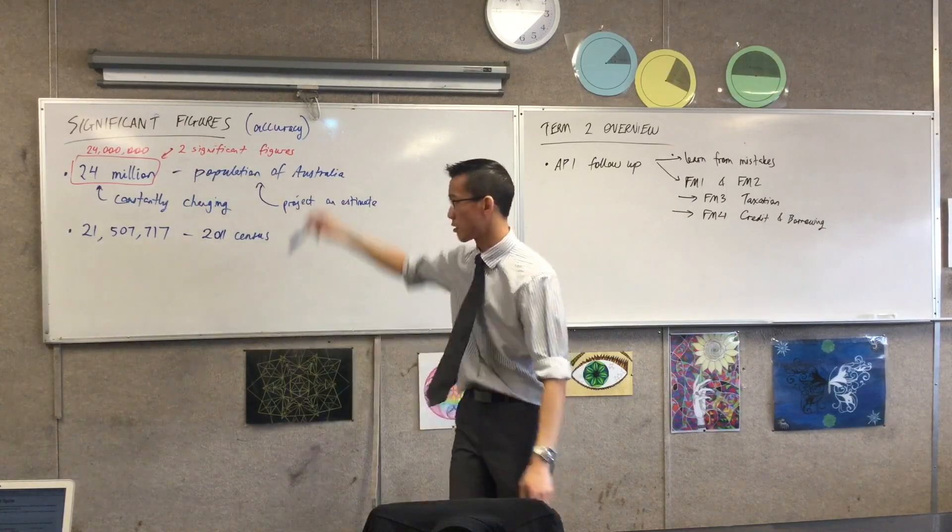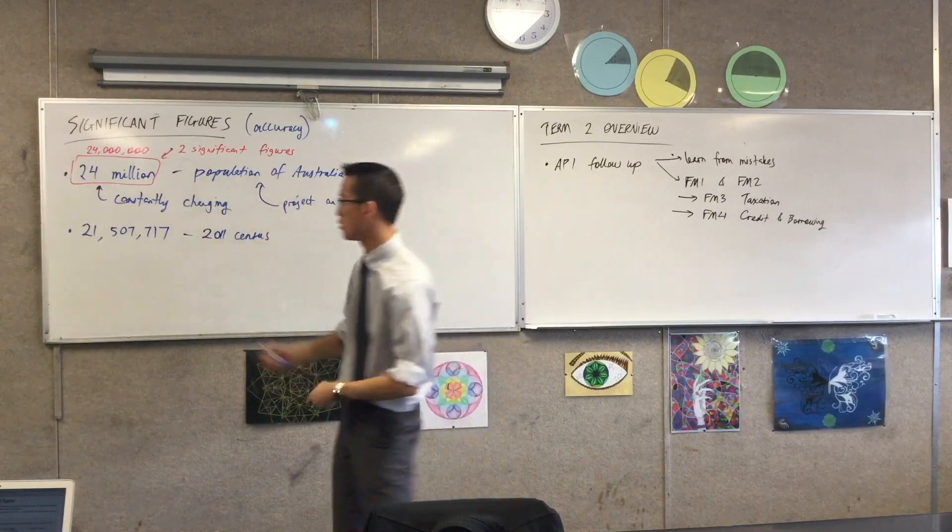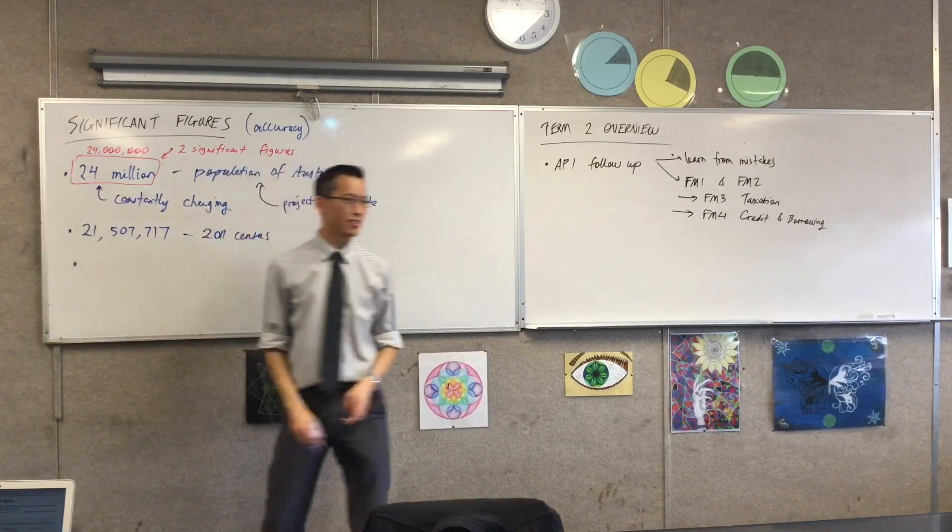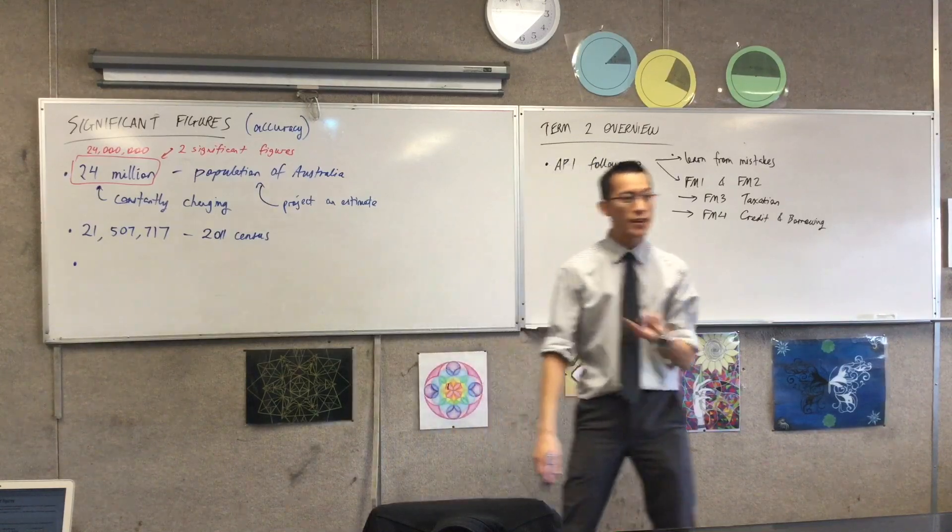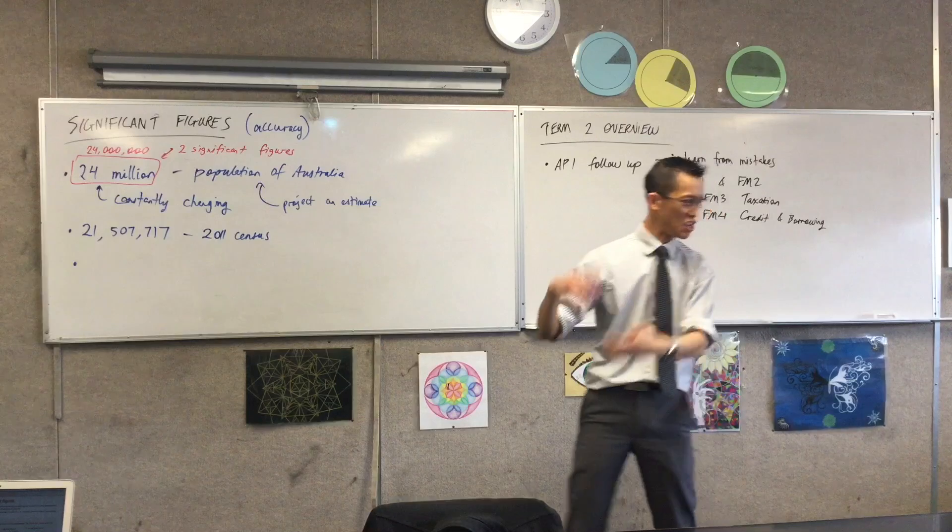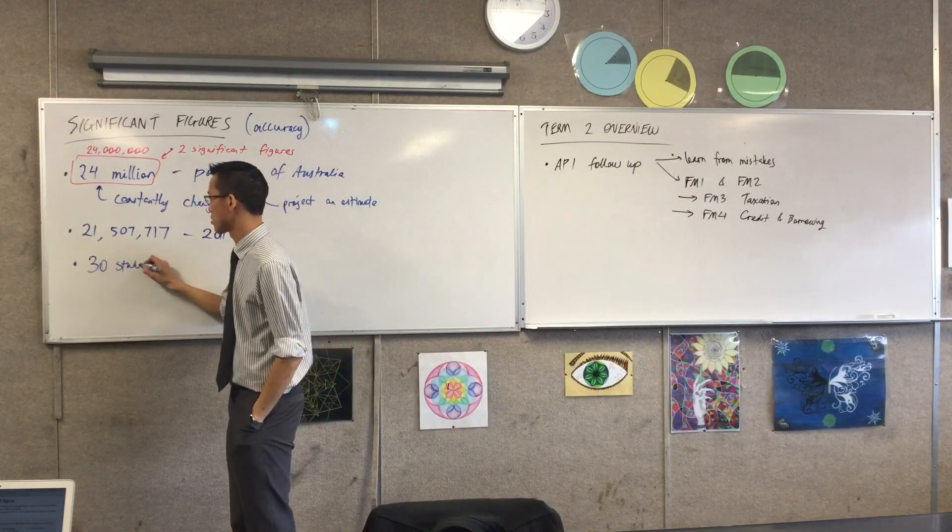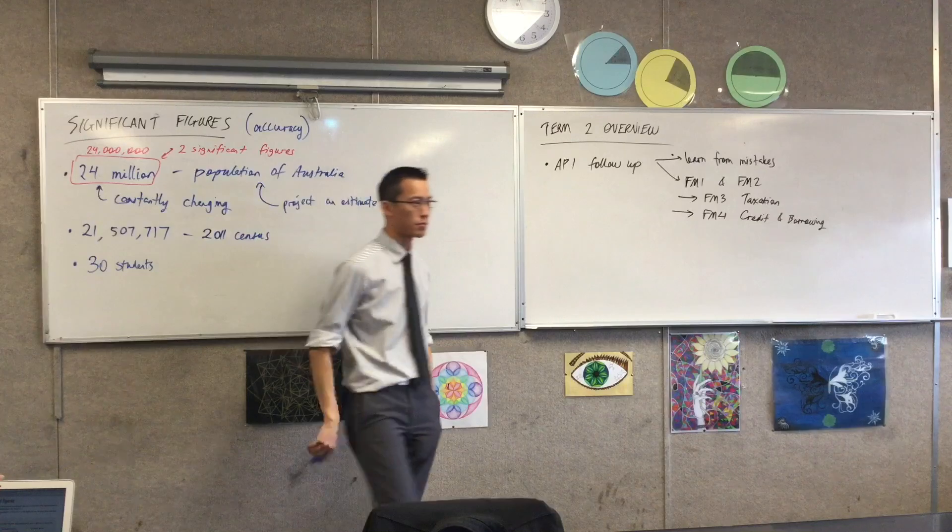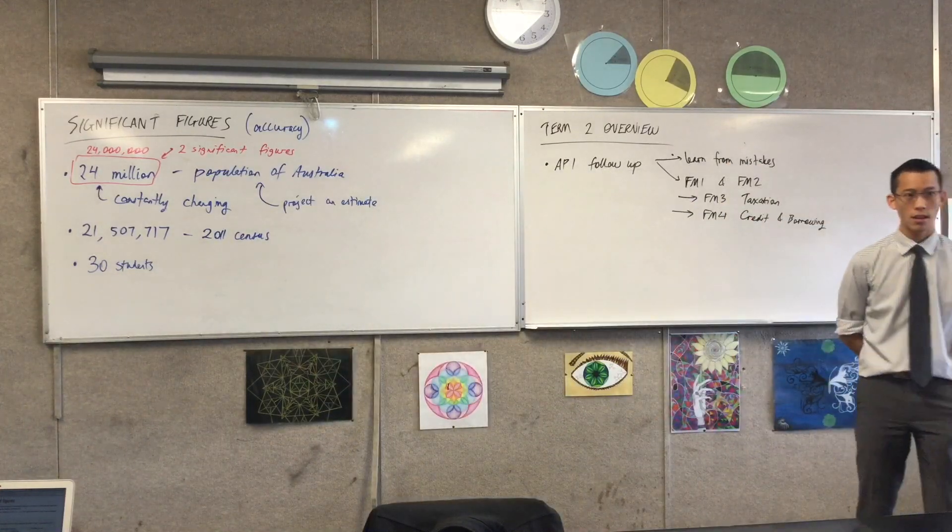Now, let's think about some other examples. So, I'm just going to keep going down the board. We want to think through this, and then I'm going to let you guys have a go at the examples yourself. If I said to you, okay, now, don't shout an answer. Just think about it first, okay? If I said to you, all right, I have a class, not this one, because it's a bit smaller, say, a year 7 class, and I counted up and I wrote down 30 students. Just pause for a second. How many significant figures do you think that would be?